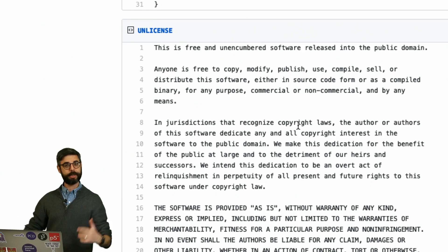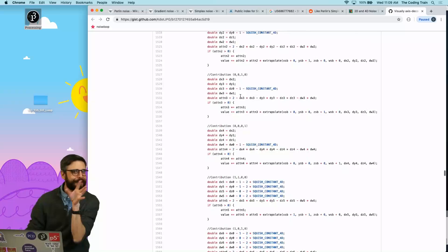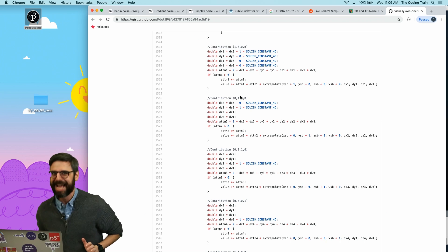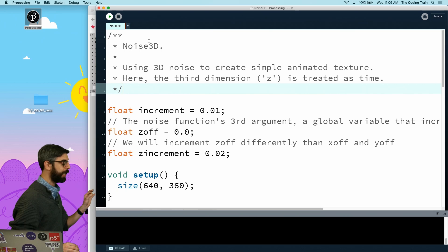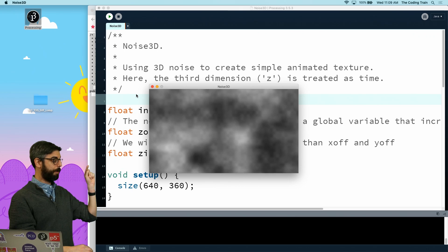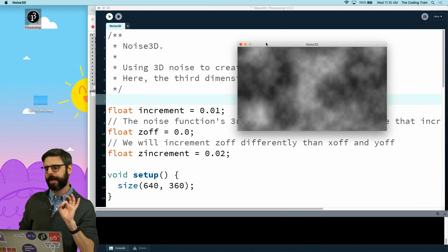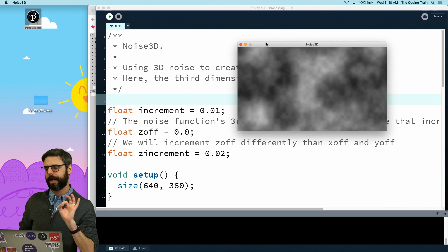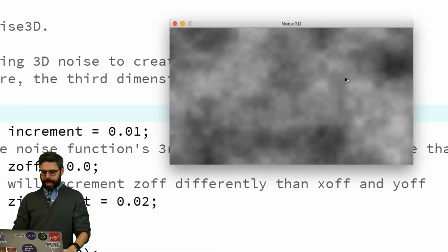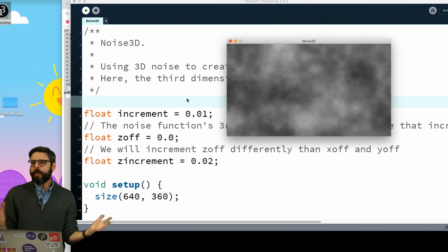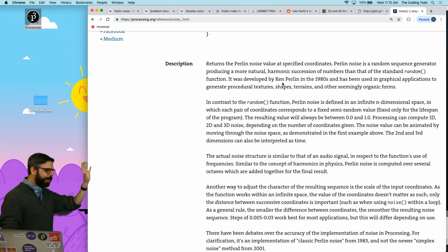Boy, that was a lot of explanation. So, what does this mean? I want to do another video after this one, which is I just find every single piece of code I ever wrote using the processing Perlin noise function, and try to do it again with OpenSimplex noise. But, I'm going to do that just for one thing right now. I want to examine and look at the difference in quality. And, by the way, what does it mean? What do I mean when I say quality? So, first of all, I'm going to read this part. There have been debates over the accuracy of the implementation of noise in Processing. For clarification, it's an implementation of a classic Perlin noise from 1983, and not the newer simplex noise method from 2001.